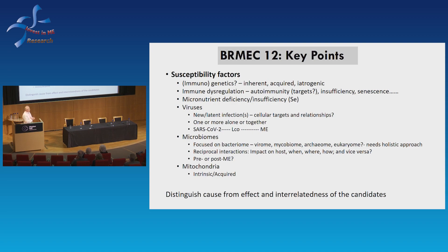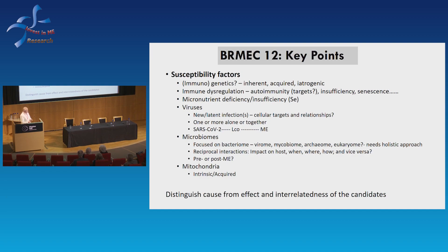The mitochondria as well — we've heard there are intrinsic as well as acquired deficiencies in the mitochondria. So all of these are risk factors or susceptibility factors, and with all of them we really need to distinguish cause from effect and understand how these things are interrelated, because they're unlikely to work in isolation. It's a combination of factors — that's why this is such a complex disease, trying to unravel what the major players are and how they relate to others.